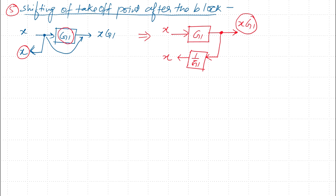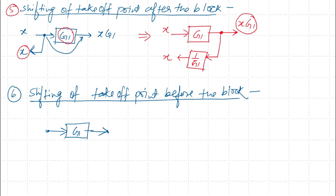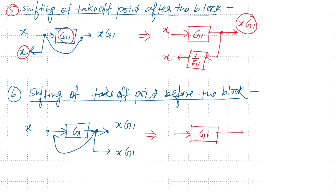Similarly, rule 6 is the shifting of takeoff point before the block. We have a block with gain G1 and input signal x; output is xG1. We have a takeoff point at the output terminal which also has value xG1, and we want to shift this takeoff point before block G1. In the equivalent diagram, the output is x times G1 and we have shifted the takeoff point from the output terminal to the input terminal, but the value at the input terminal is x.